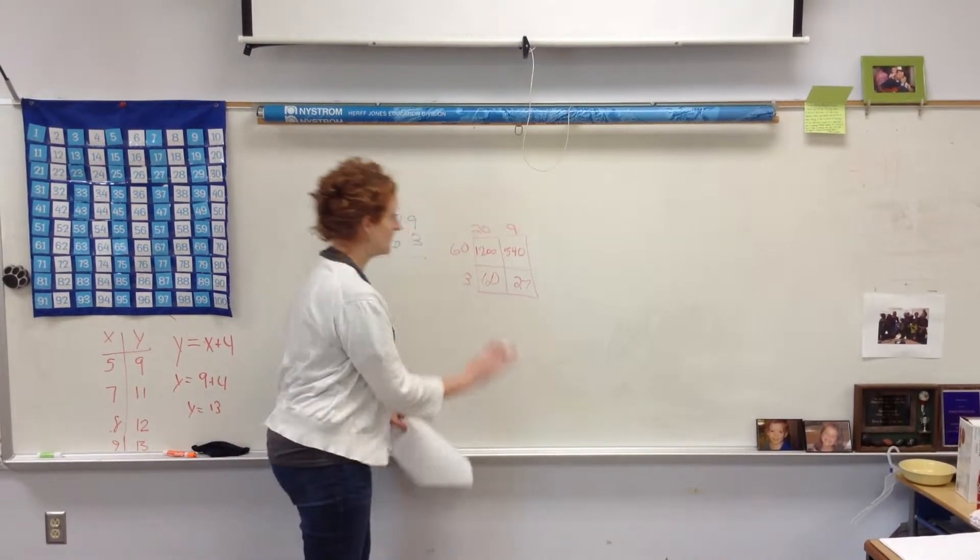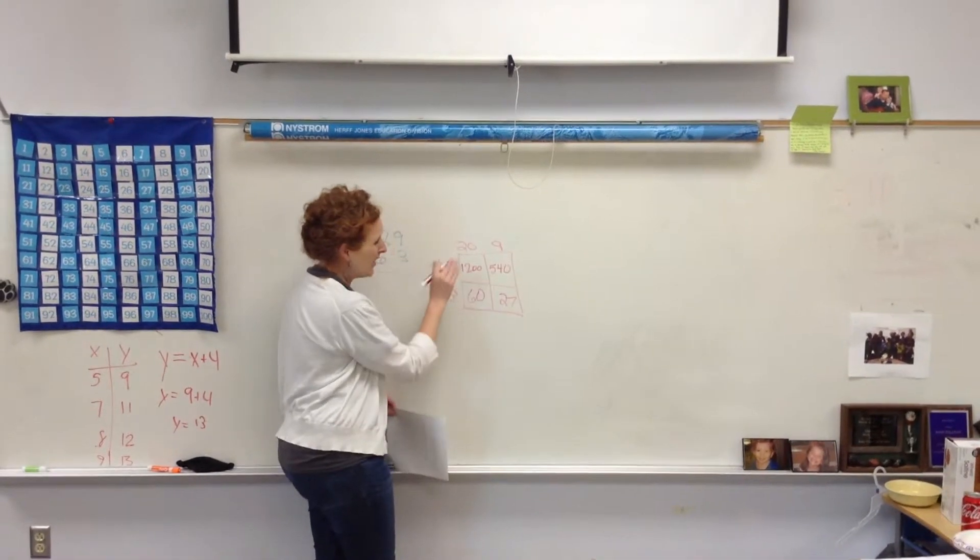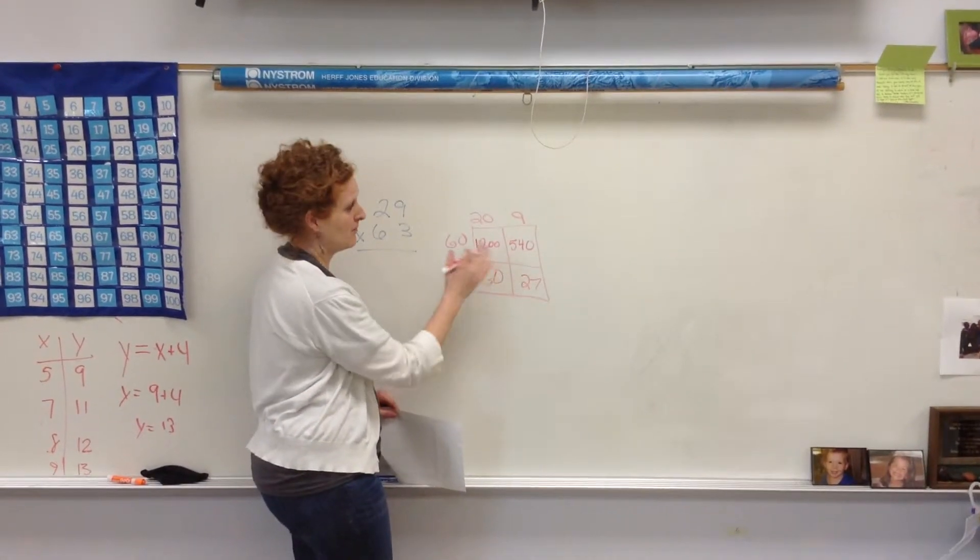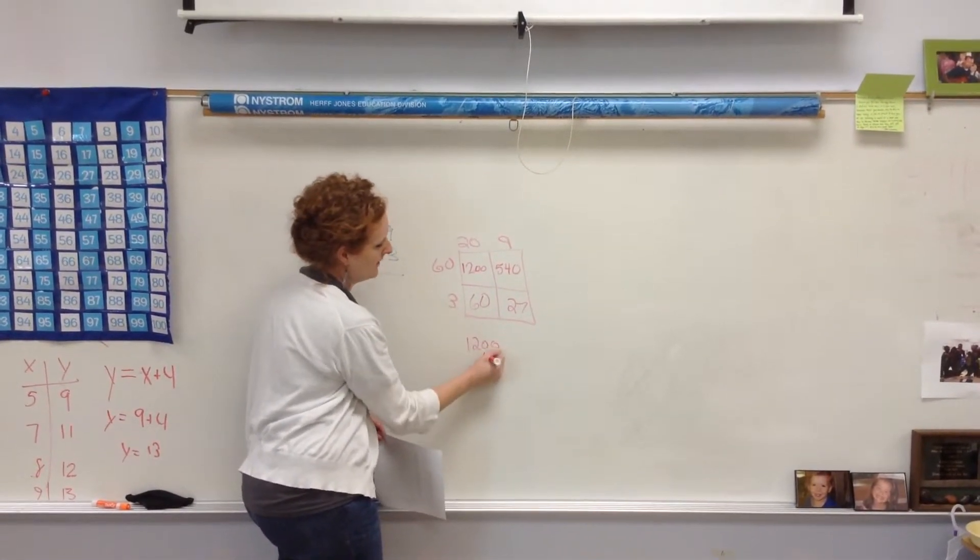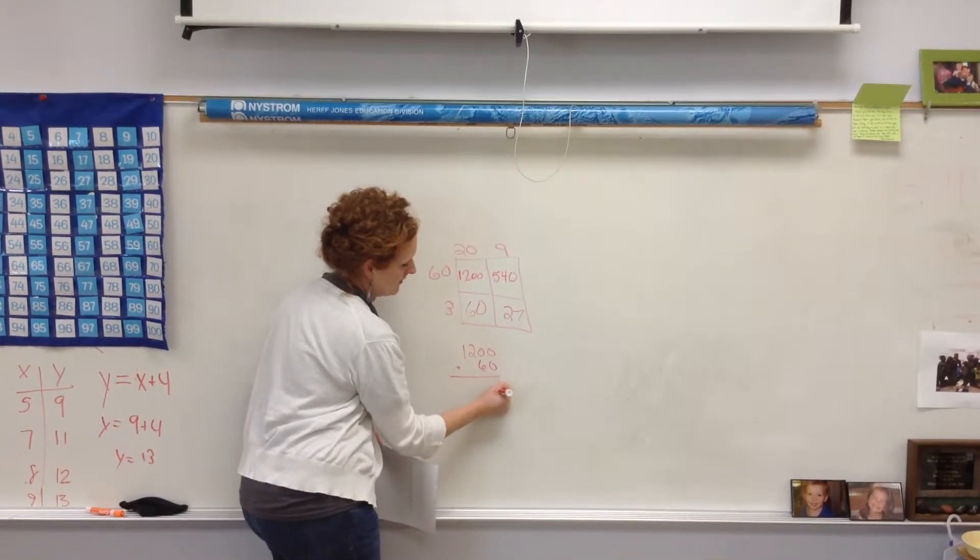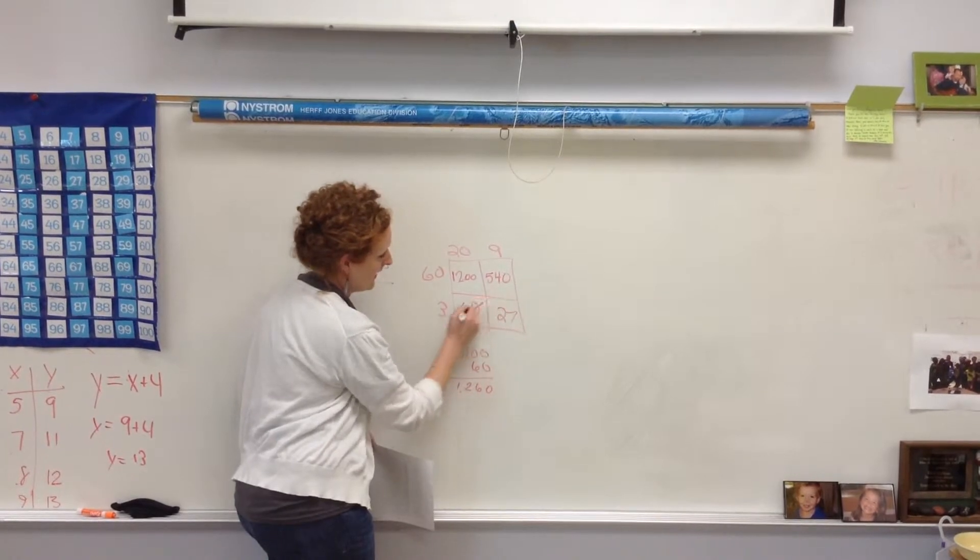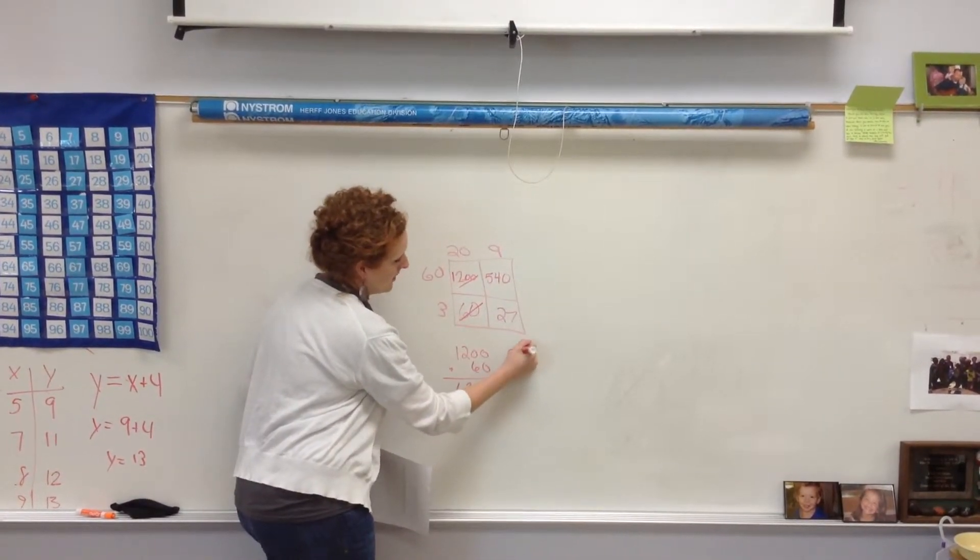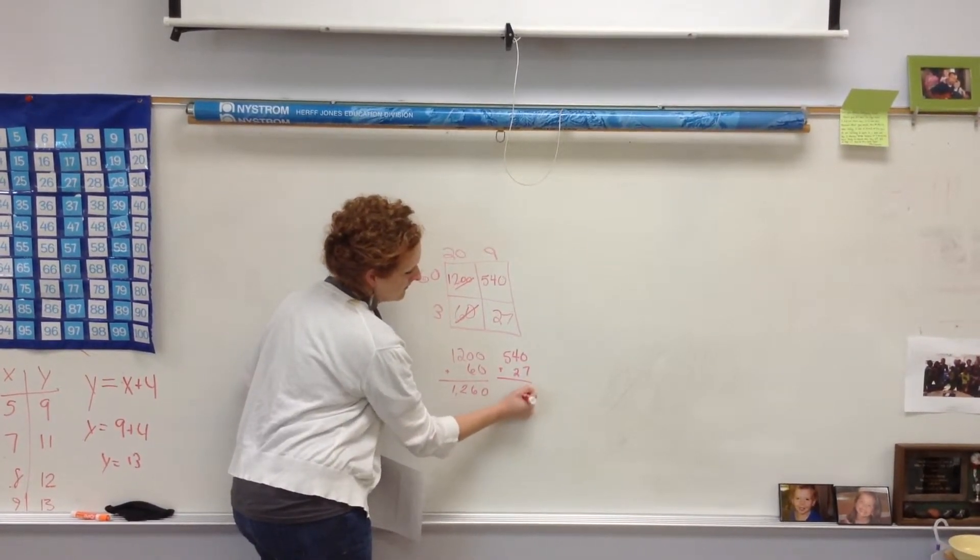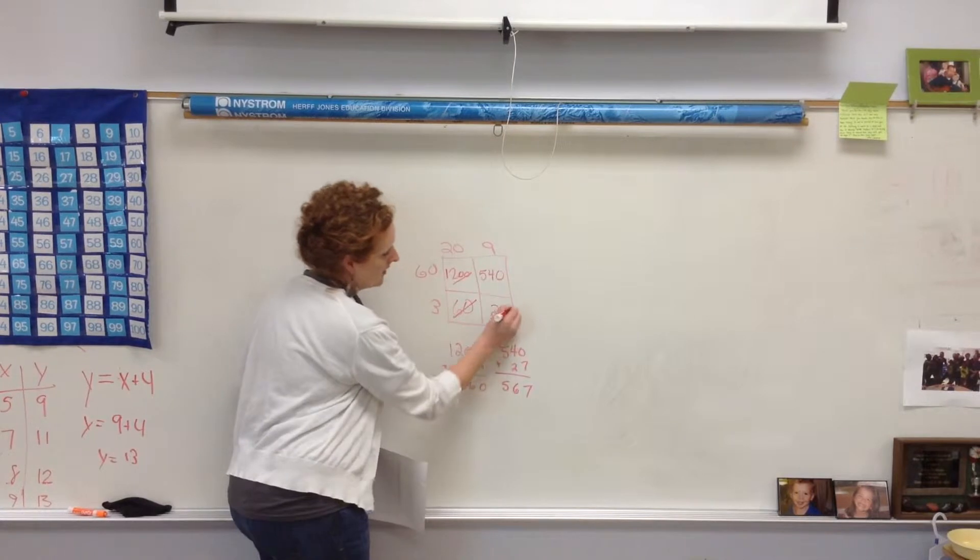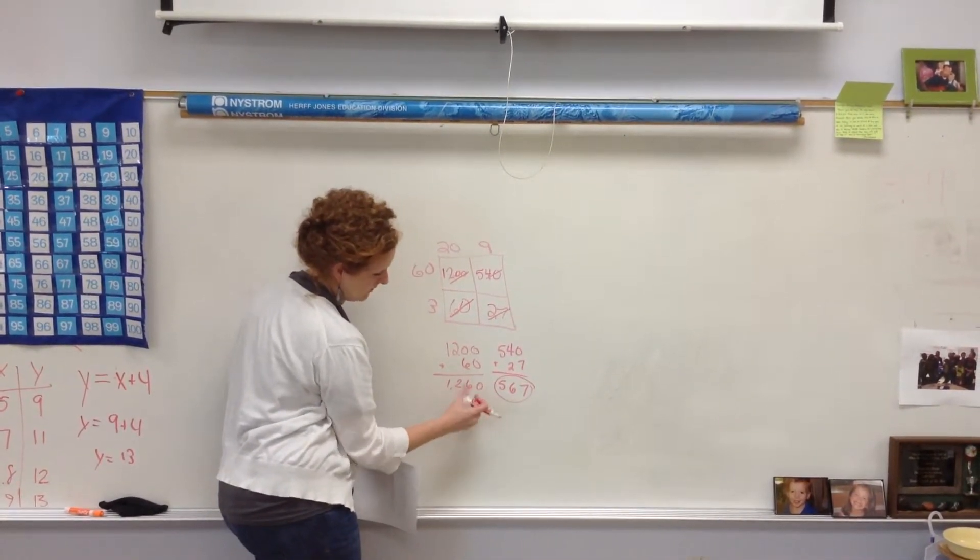So, how they add them together, the order really doesn't matter. We just have to have all these pieces added together. So, we do 1,200 plus 60 equals 1,260. So, I've added these over here, and I'm going to put it 540 plus 27. Now, I need to combine these two together. So, I'm just going to bring this product right here and put it below this one to add it.